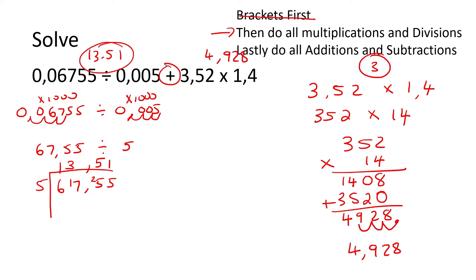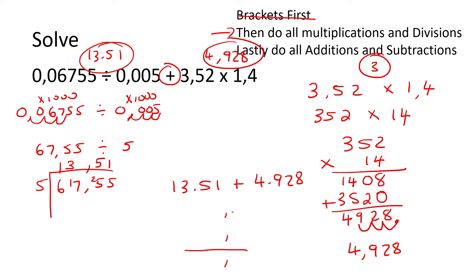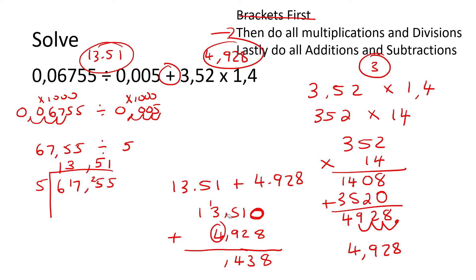So we can say four comma nine two eight. Now we need to add 13.51 and 4.928. When adding, put the decimals on top of each other. So we have 13.51 and then 4.928 — be careful, the digits are four, nine, two, eight, so this empty space will be a zero. Zero plus eight is eight, one plus two is three, five plus nine is 14 carry one, four plus three plus one is eight, and then one. So we end up with 18 comma four three eight.